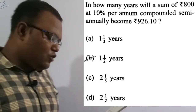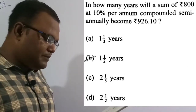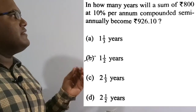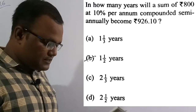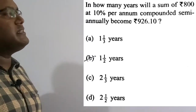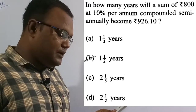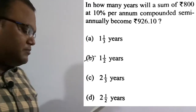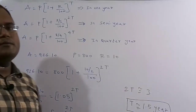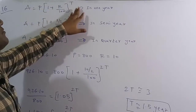Now solving the 16th question: in how many years will a sum of ₹800 at 10% per annum compounded semi-annually become ₹926.10? Option B, 1.5 years, is correct. The compound interest formula for semi-annual compounding is: A = P(1 + r/2/100)^(2t).